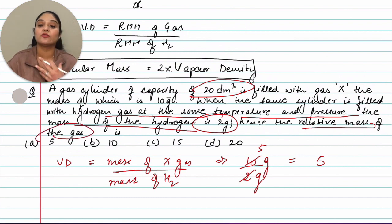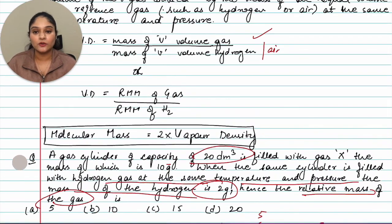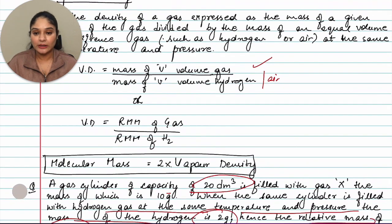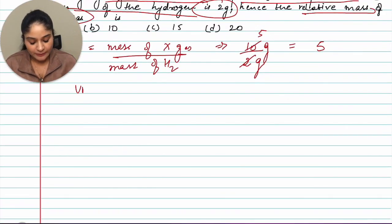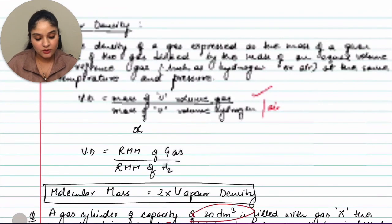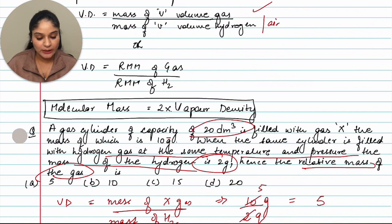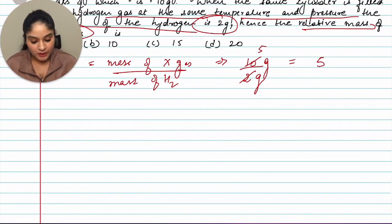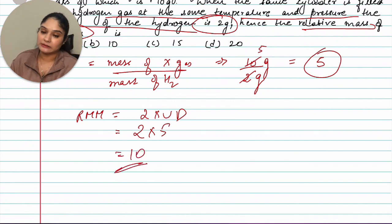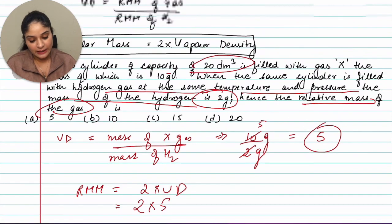We found vapor density = 5. Now using the formula: molecular mass = 2 × vapor density = 2 × 5 = 10. So the relative molecular mass of gas X is 10.